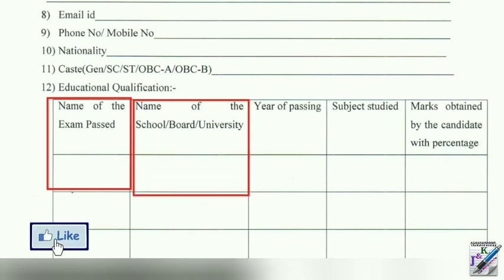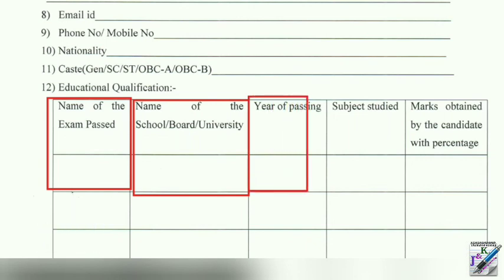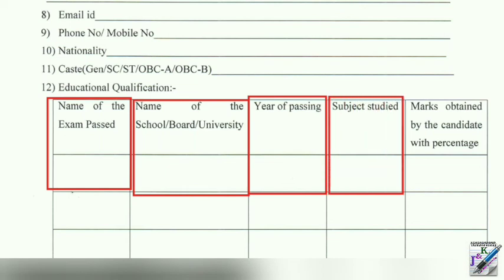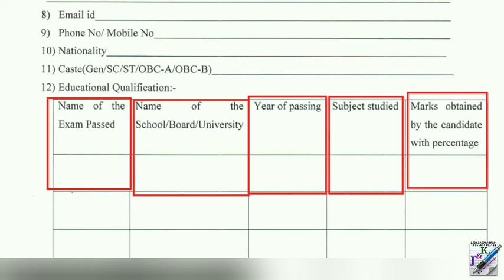What is the name of the school and board or university? This is a short form marked by the candidate with a percentage — this is the marks obtained, written in the box.